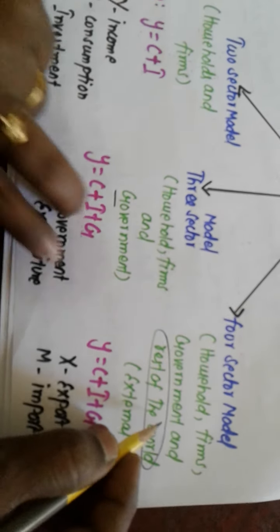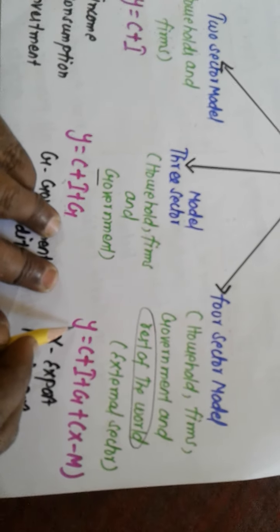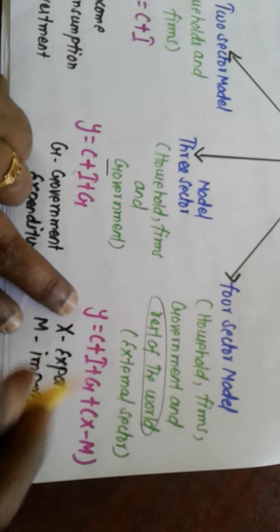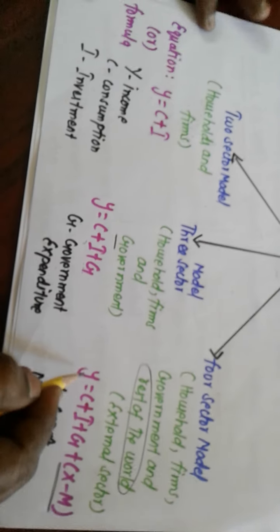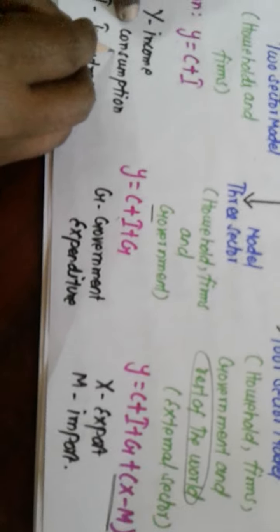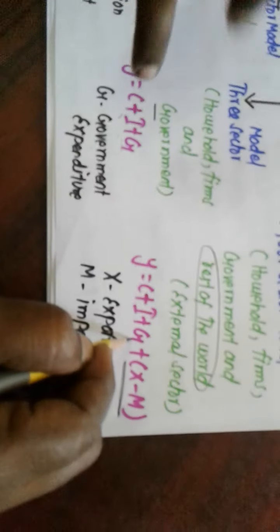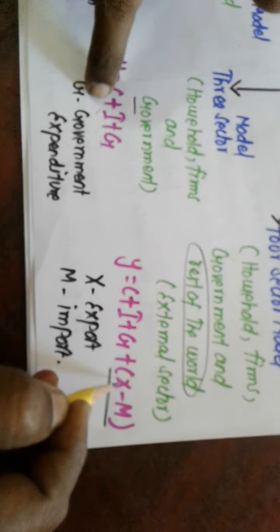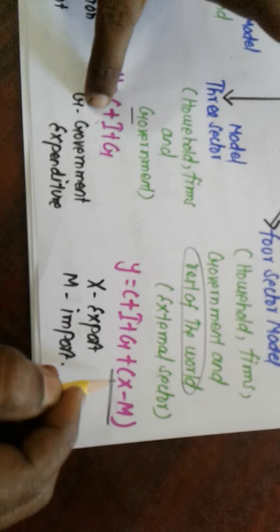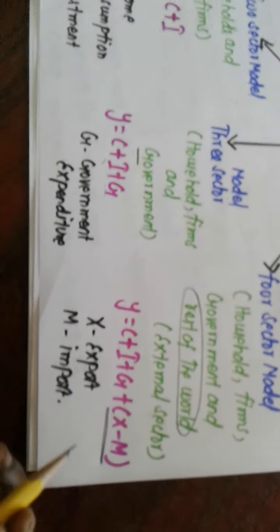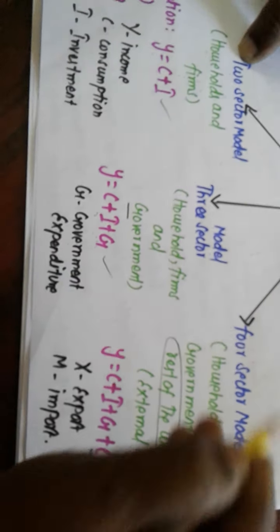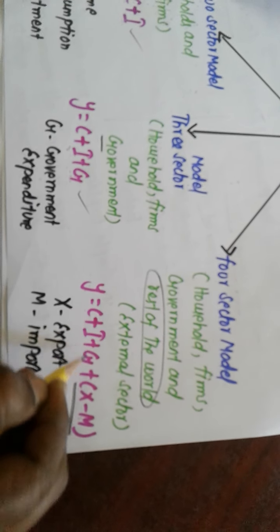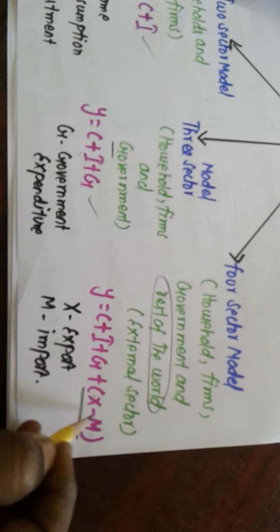For the four-sector model, the formula is Y equals C plus I plus G plus X minus M. The external sector is represented as X minus M. Y refers to income, C refers to consumption, I refers to investment, G refers to government, X refers to export, and M refers to import. Summary: two-sector model — Y equals C plus I; three-sector model — Y equals C plus I plus G; four-sector model — Y equals C plus I plus G plus X minus M.